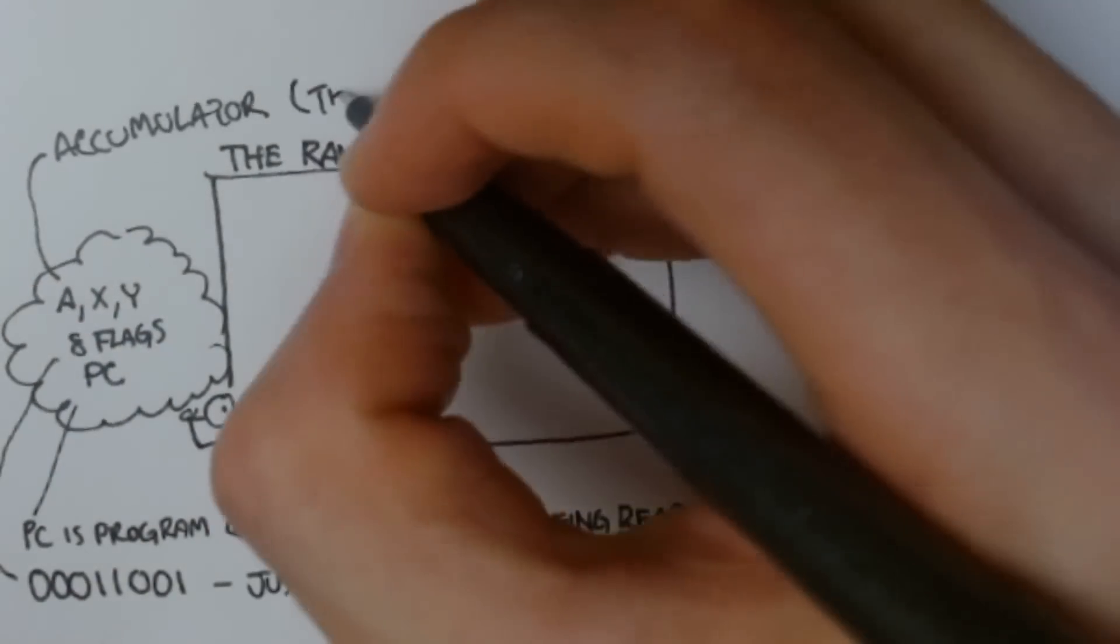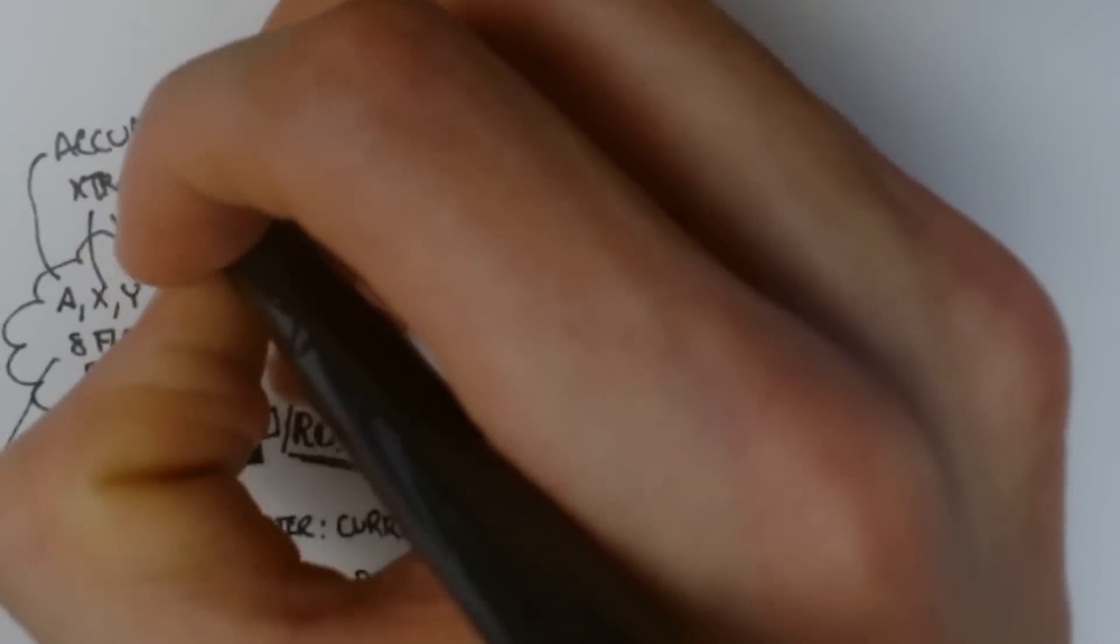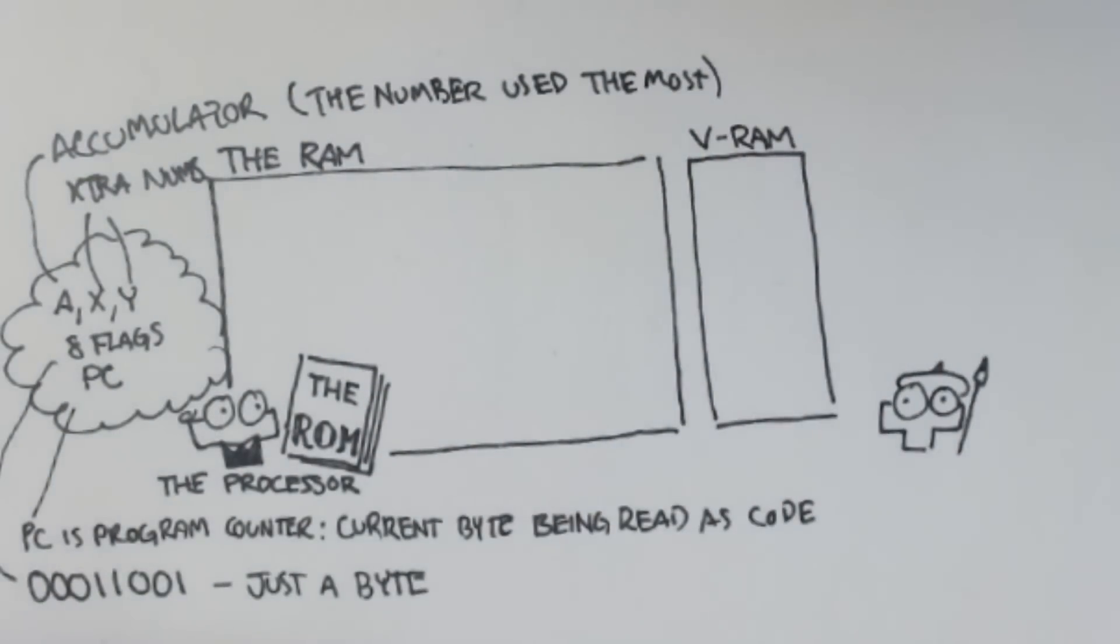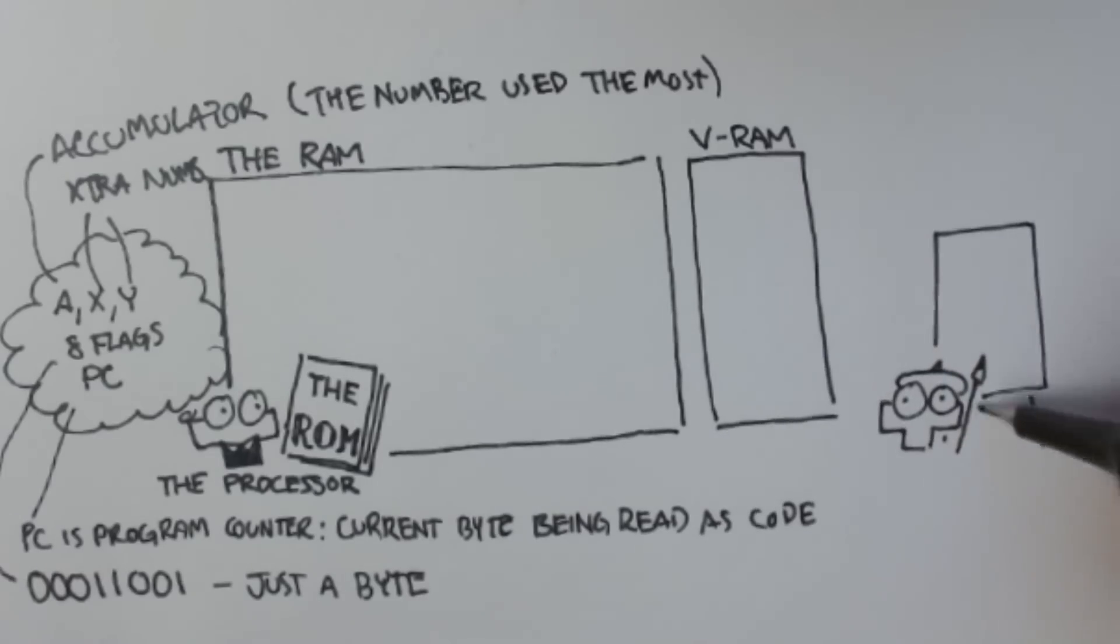The mathematician is the processor, the book is the ROM, and the board is the RAM. The artist is the PPU, which is short for Picture Processing Unit. They're responsible for making the image that gets drawn to the screen.